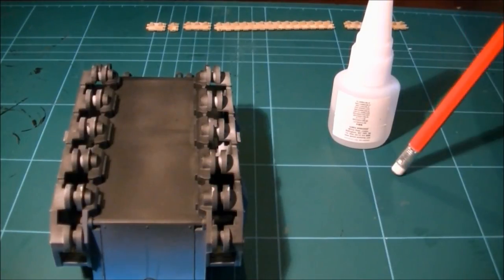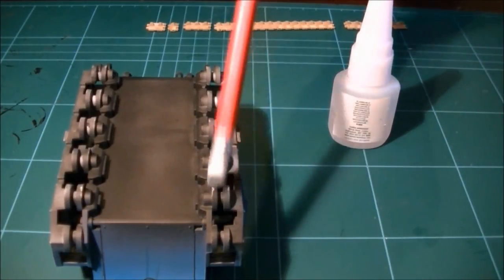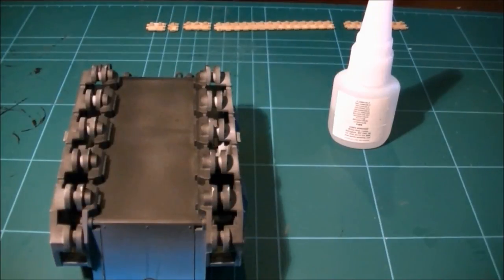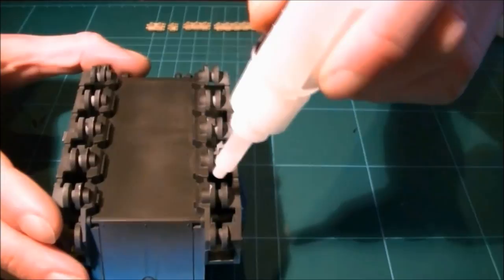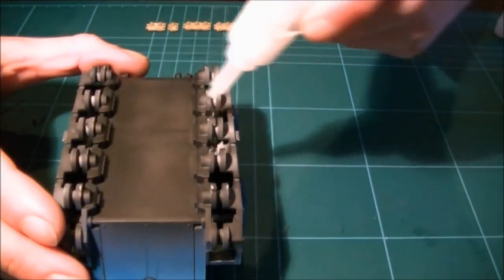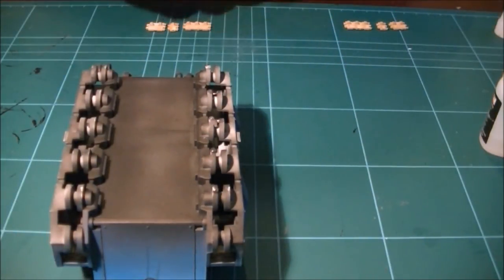Whenever I'm attaching treads to tanks, I always like to just lay out the treads in the order that they go on. Also, I'll start from the middle and work my way out. This just seems to give me a better finish once the treads are actually on.